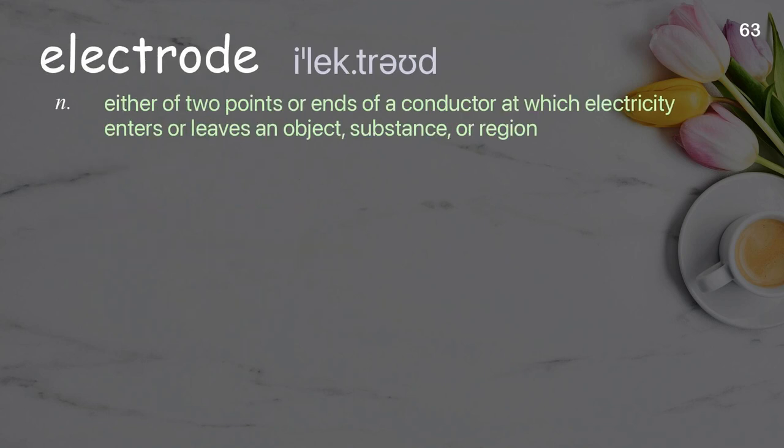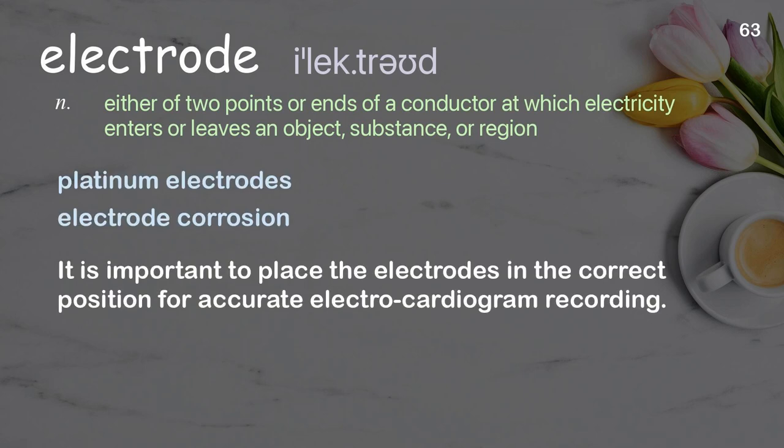Electrode: either of two points or ends of a conductor at which electricity enters or leaves an object, substance, or region. Examples: platinum electrodes, electrode corrosion. It is important to place the electrodes in the correct position for accurate electrocardiogram recording.